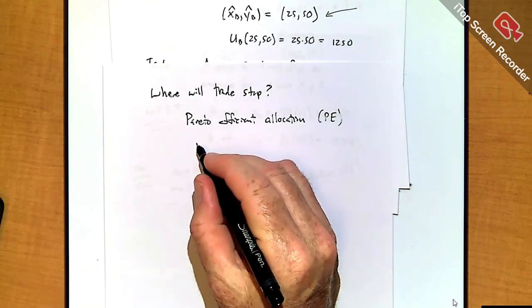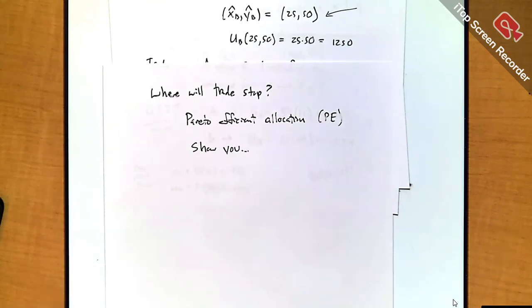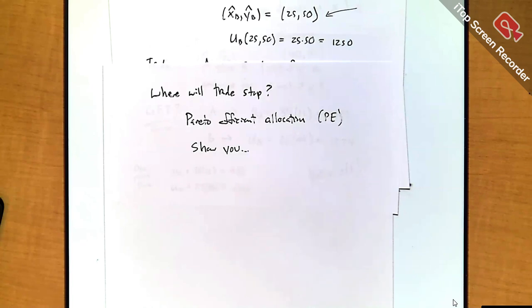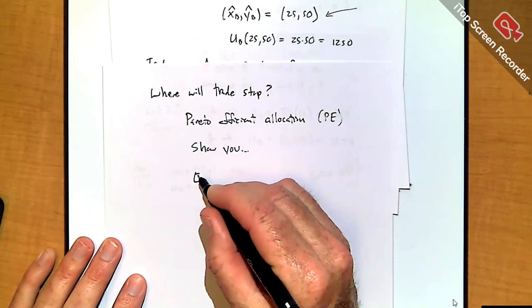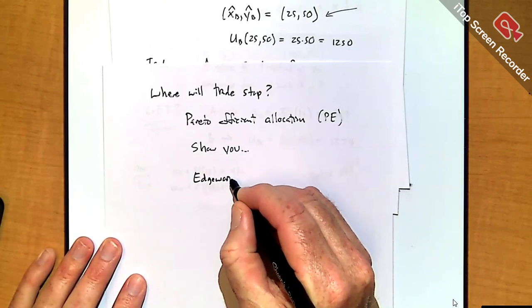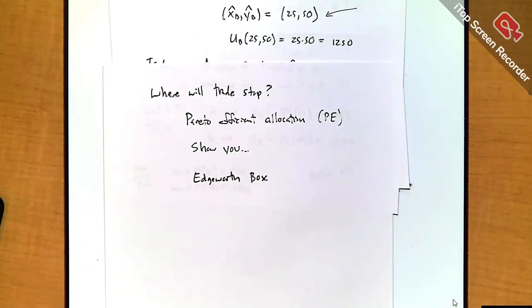In order to show you Pareto efficient allocations nicely, I need to add a little more structure to the model, and so I'm going to introduce what's called an Edgeworth box, which is commonly used to represent exchange economies. We have all kinds of names here — Pareto and Edgeworth — very famous economists. One day there'll be a famous one from us, right? Have you guys heard of the Edgeworth box before?